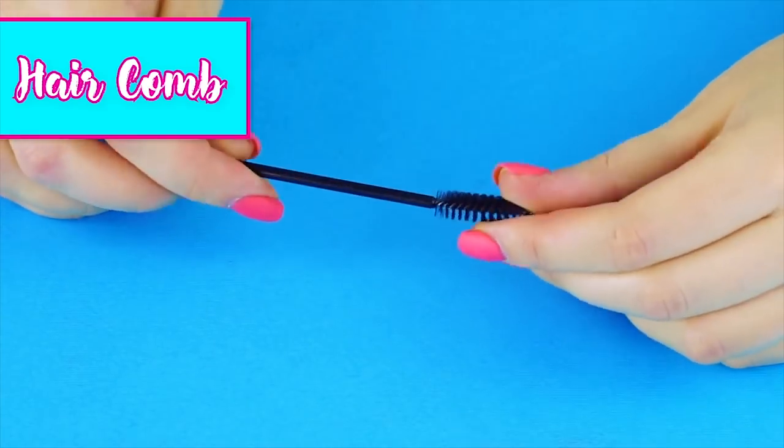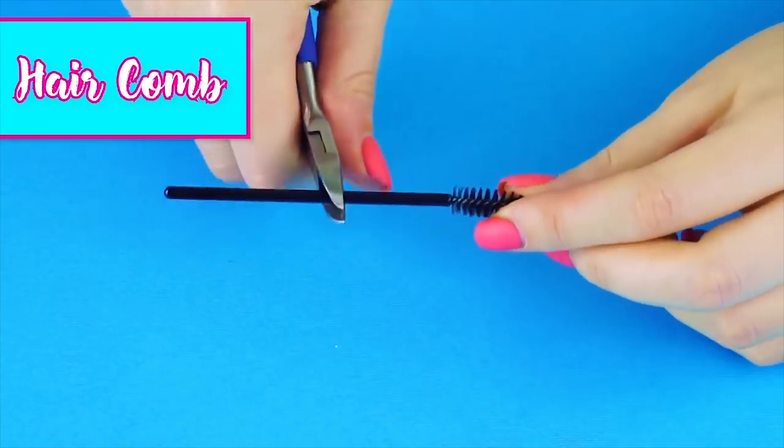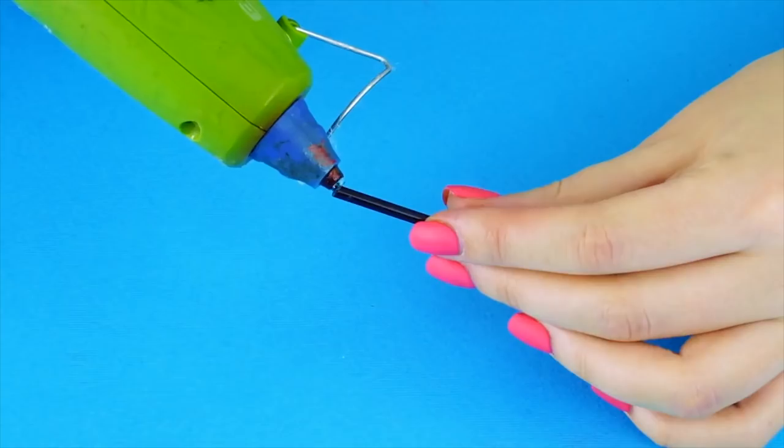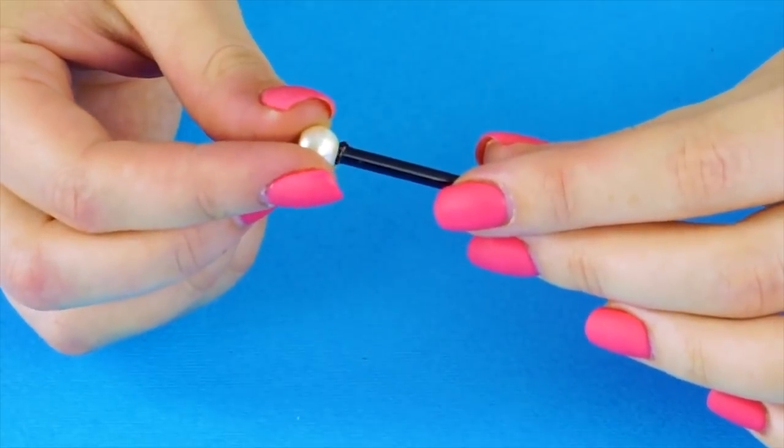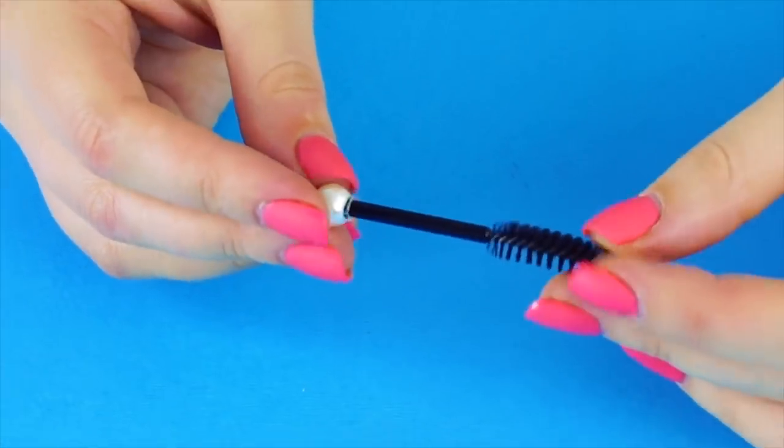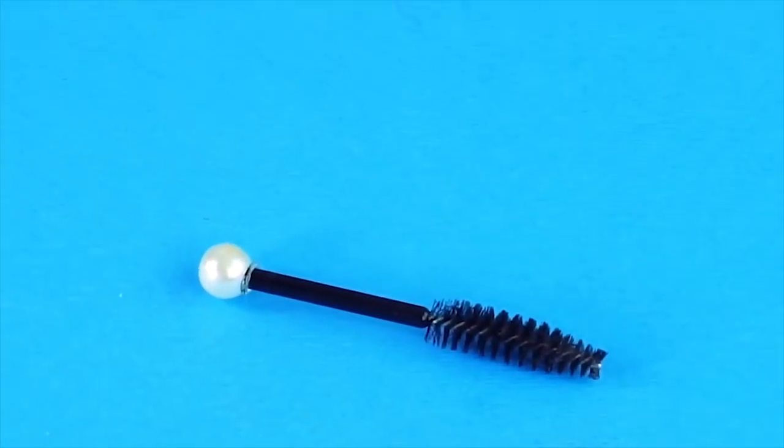Hair comb. Use an old mascara wand and cut off the end. Hot glue a pearl to the end. And brush all the tangles away.